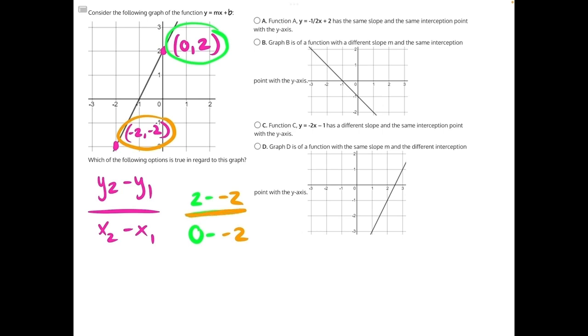When we do the numerator, a minus a negative is the same as adding a positive, and that's true in the denominator too. So we have two plus two in our numerator, which is four, and then we have zero plus two, which is two. When we simplify this fraction down, we will get four divided by two is the whole number two.